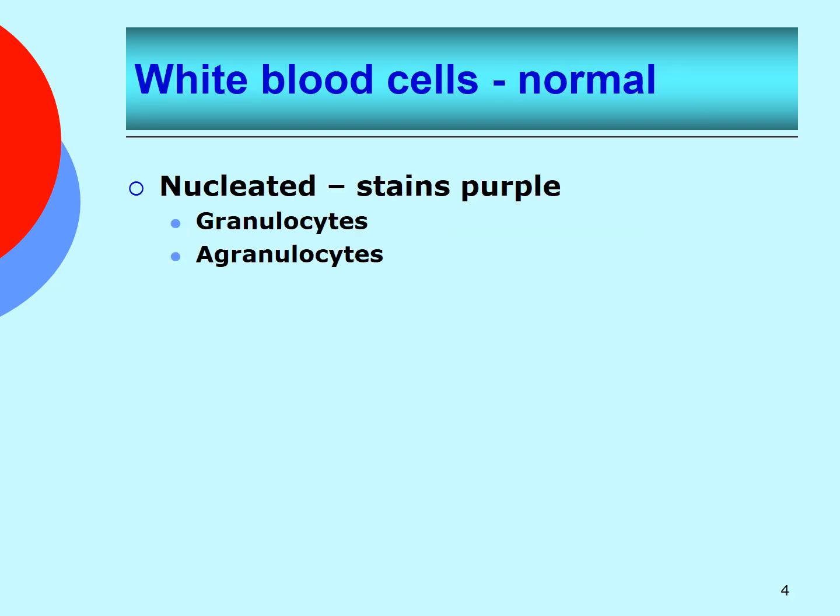White blood cells contain a nucleus which will appear purple or dark blue due to the stain used in the preparation. An elevated number of white blood cells could indicate infection or a white blood cell cancer such as leukemia. White blood cells can be divided into two main classifications: granulocytes and agranulocytes. Granulocytes contain granules in the cytoplasm which may stain lavender, red, or blue, while agranulocytes do not contain such cytoplasmic granules.